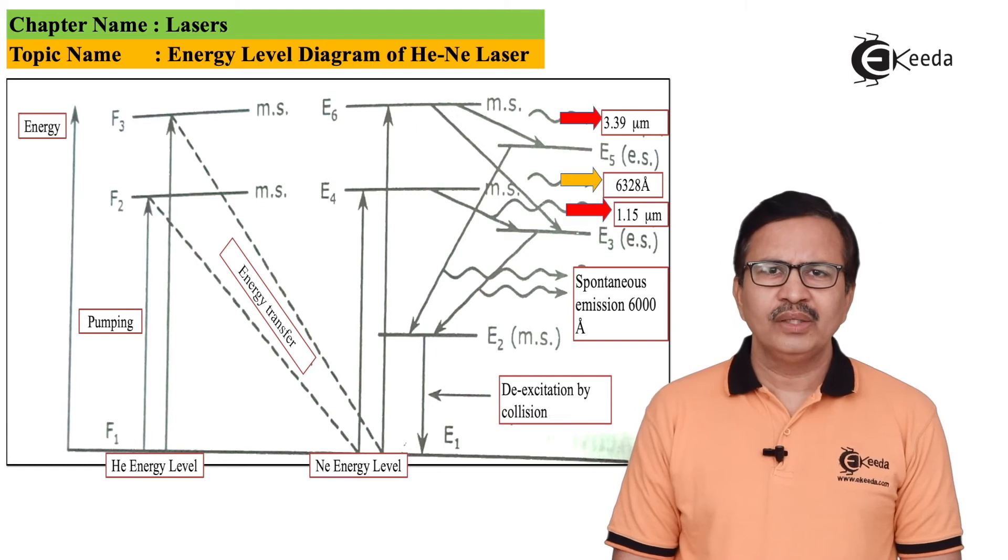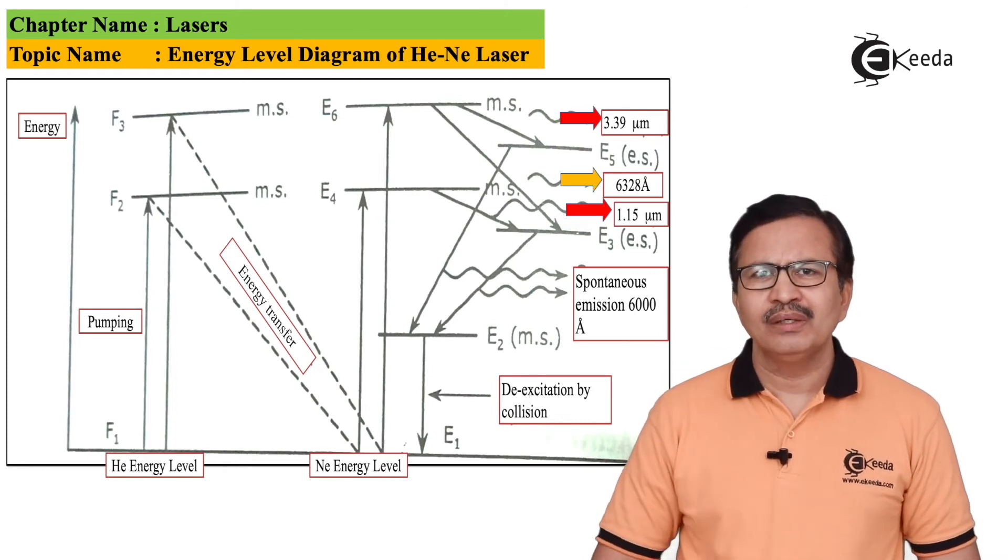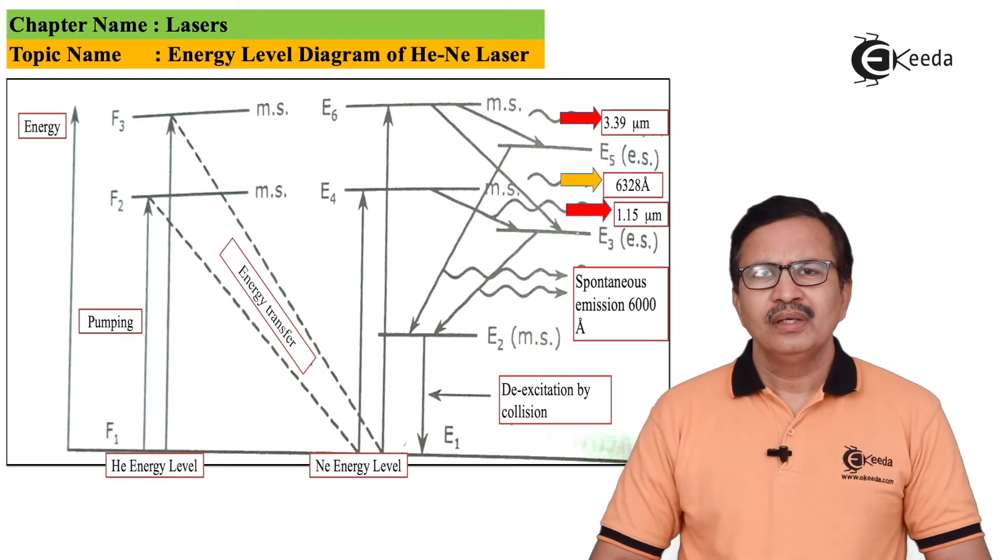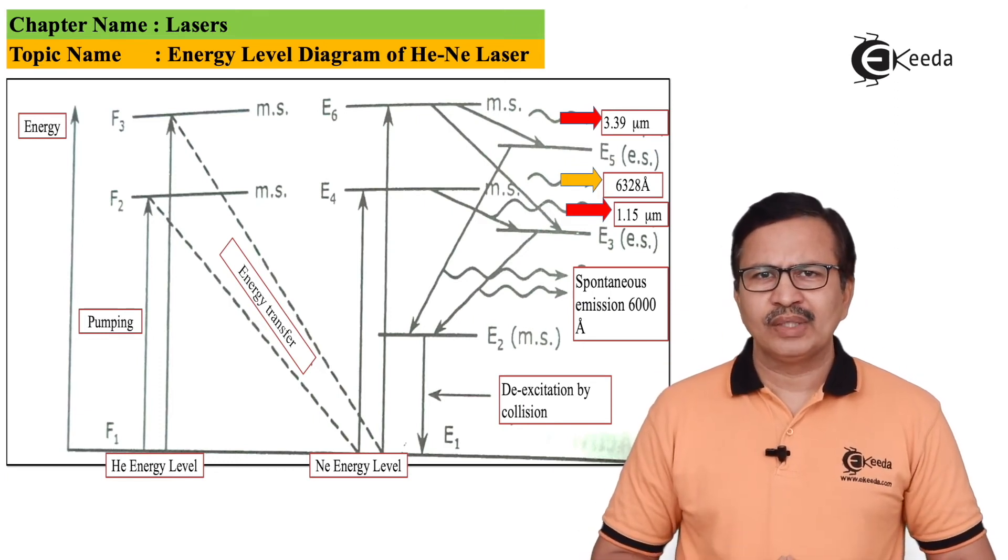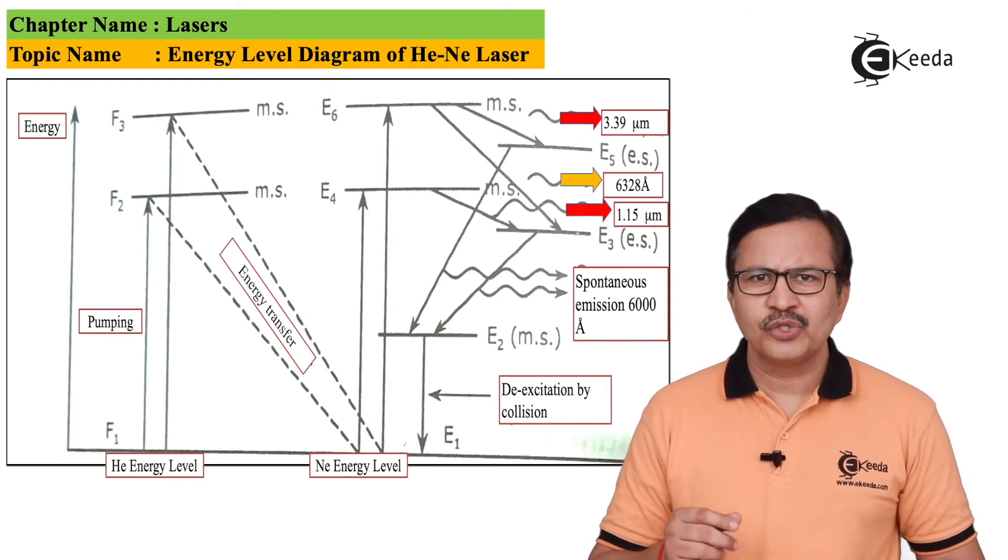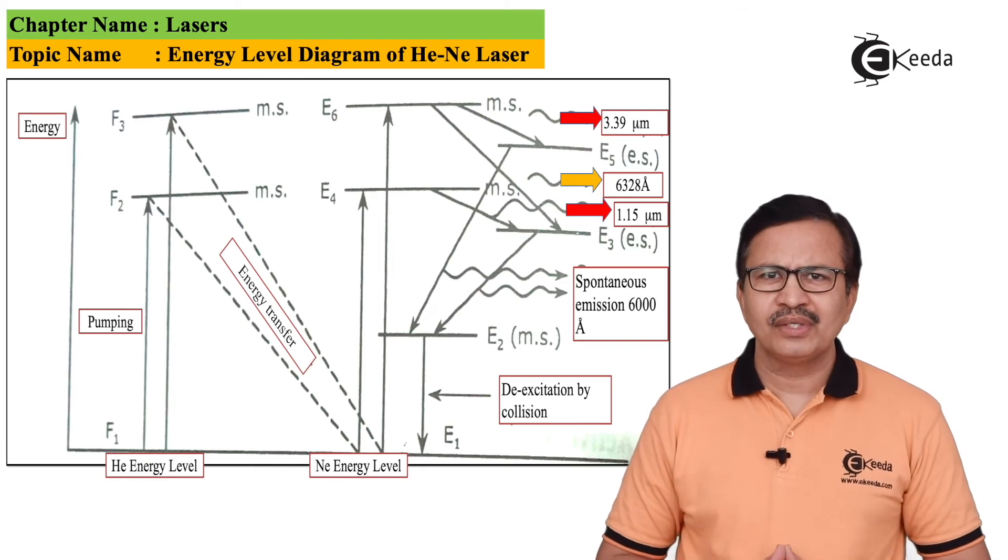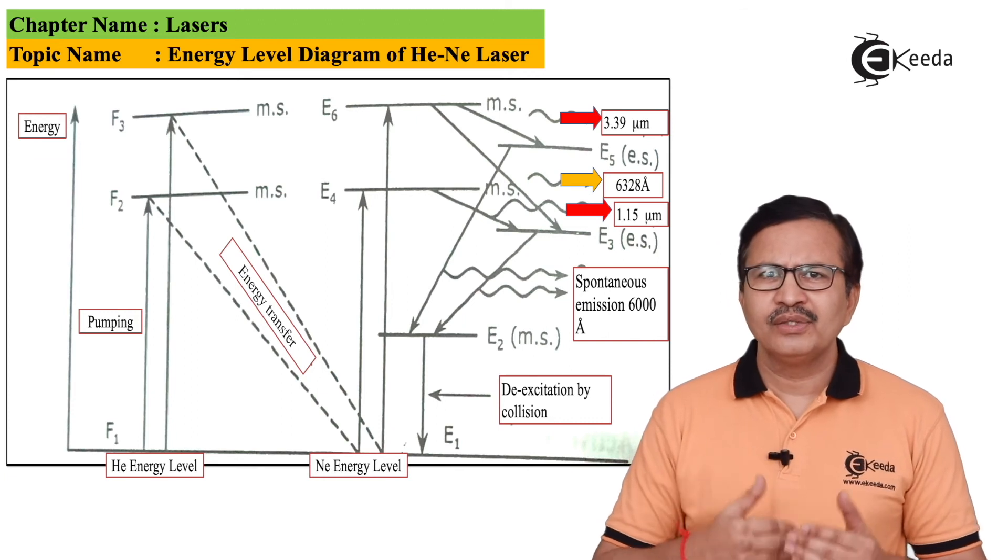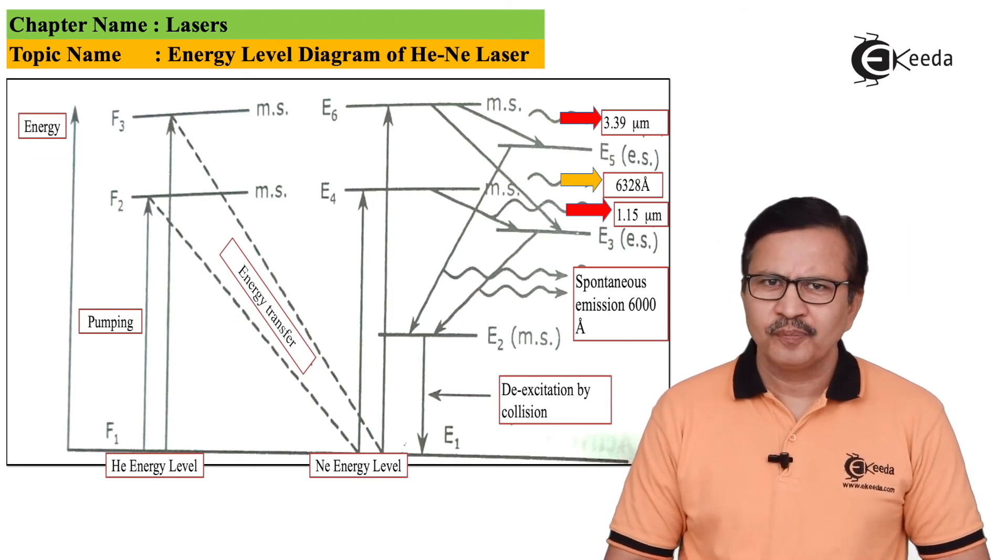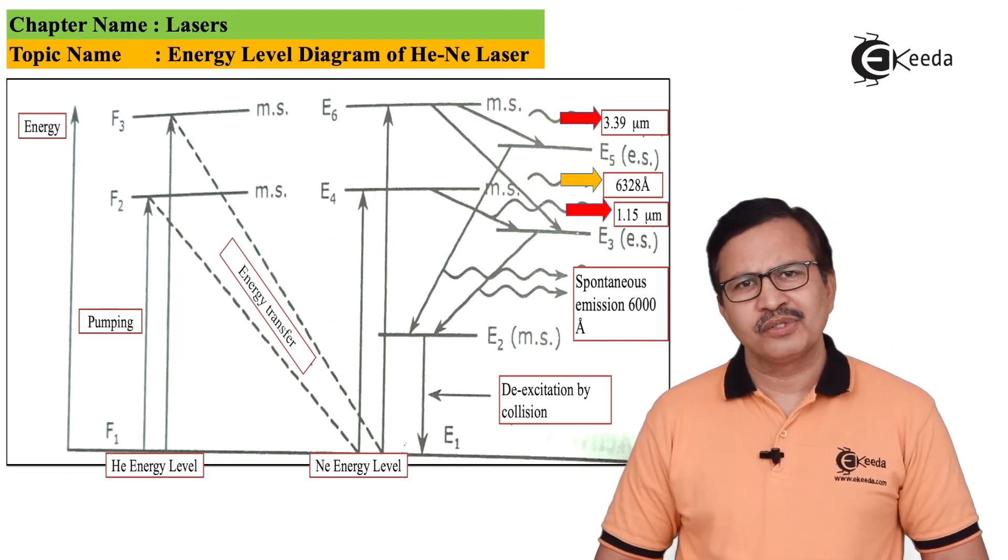There will be no lasing action from transition E2 to E1 because it is very close to the ground state. Since most atoms are in metastable state E2 close to the ground state, neon atoms lose this additional energy by banging against the wall of the pyrex tube. Due to this loss of energy, they eventually go to the ground state.